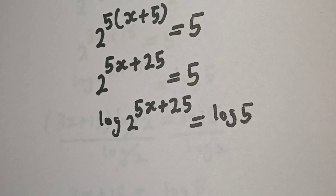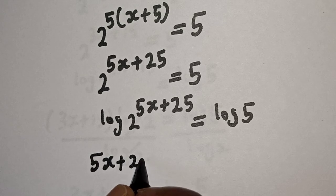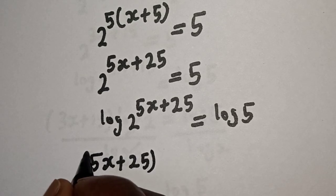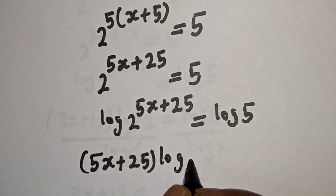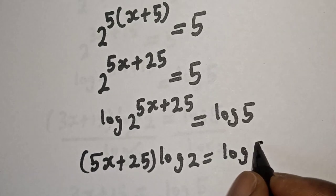Then this is (5s + 25) times log 2 equals log 5.